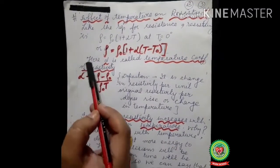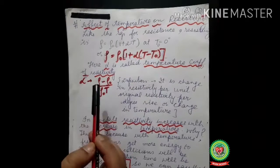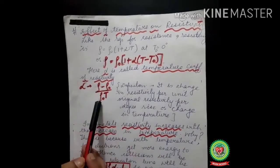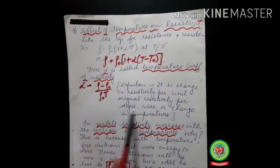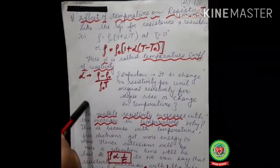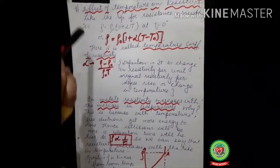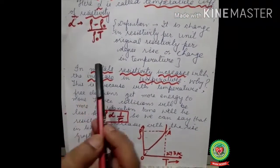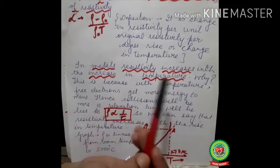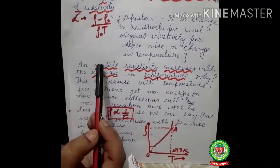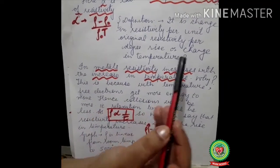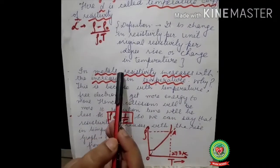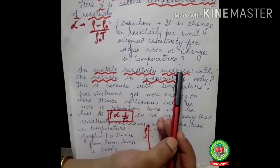Alpha is the temperature coefficient of resistivity. Its definition: it is the change in resistivity per unit original resistivity per degree rise in temperature. Now for various metals, non-metals, and alloys — in the case of metals, the resistivity increases with the increase in temperature.